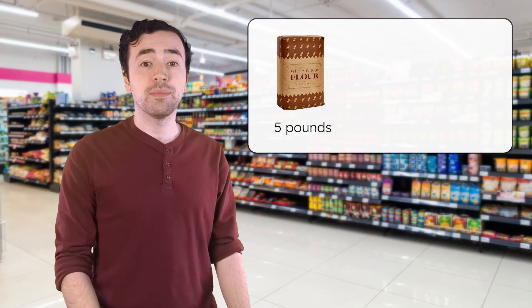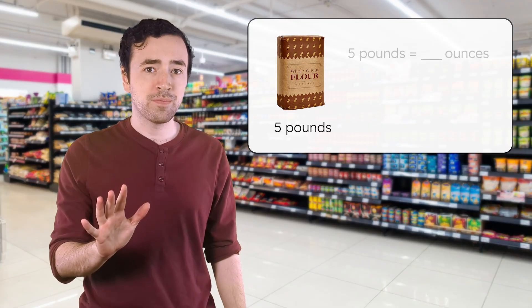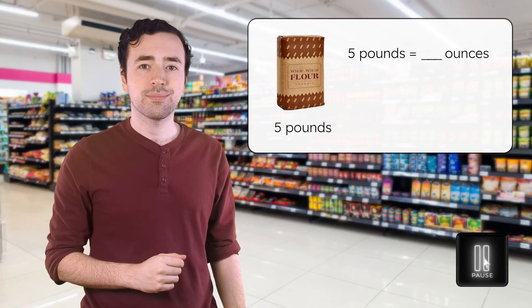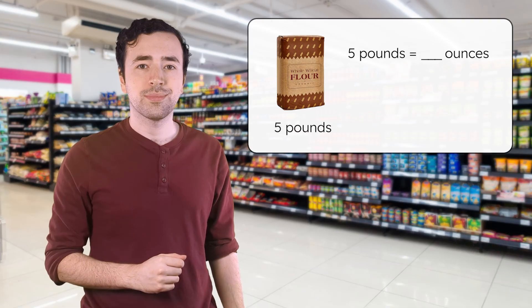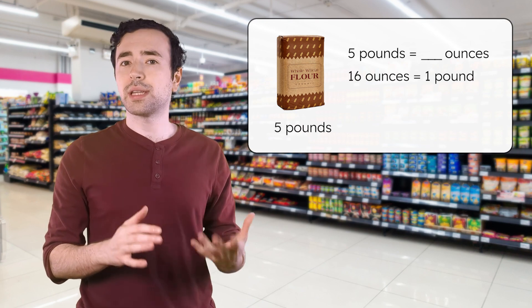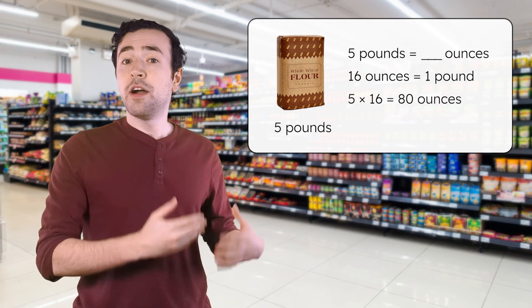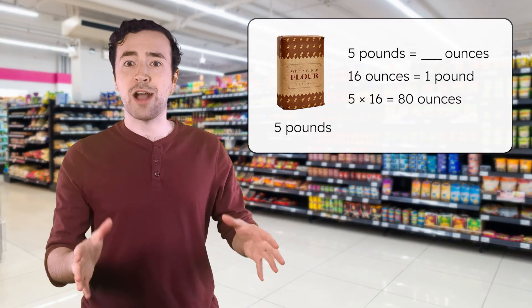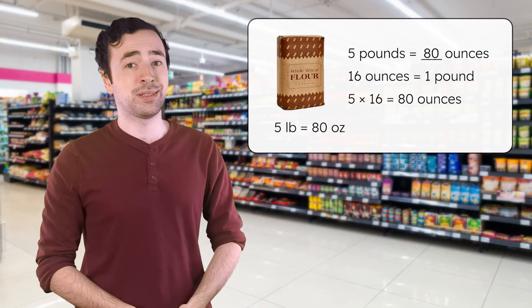Let's check out some items from my shopping list and practice a few weight conversions. First up, a bag of flour — it weighs 5 pounds. How many ounces is that? Pause here to solve in your guided notes. Since there are 16 ounces in one pound, to convert pounds to ounces we multiply by 16. So 5 pounds times 16 equals 80 ounces. That's 80 ounces of flour.